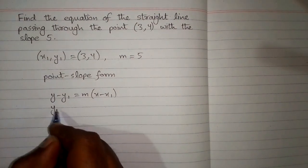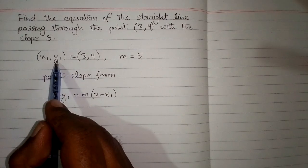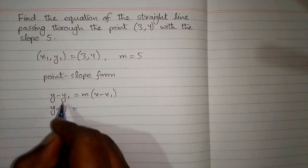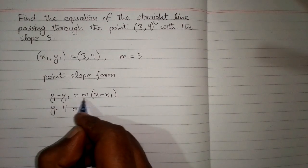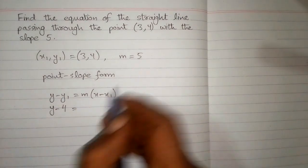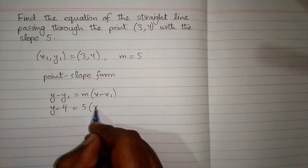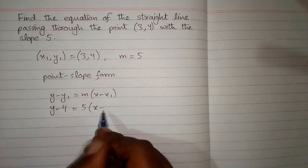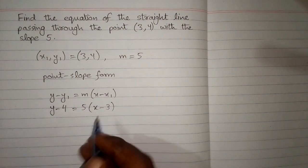So we will put the value of y1 over here, the value of y1 is 4. So we will put 4 in place of y1 and then the value of slope m is 5. So we put 5 over here, then x minus x1 and the value of x1 is 3. So we write 3 over here.